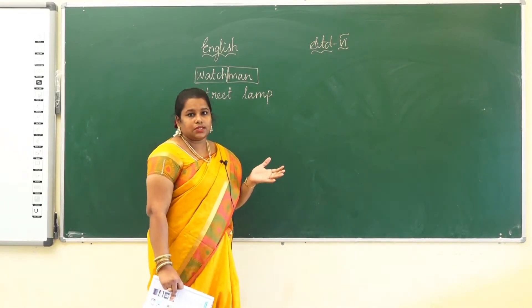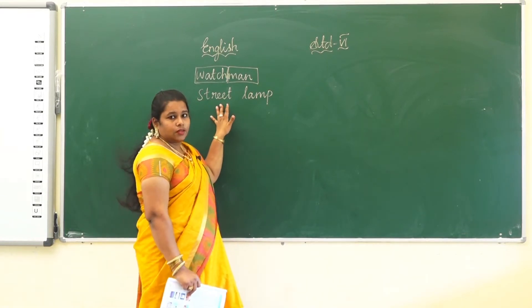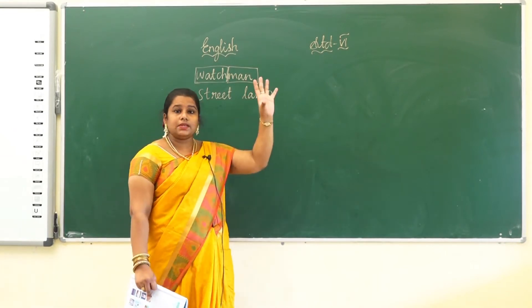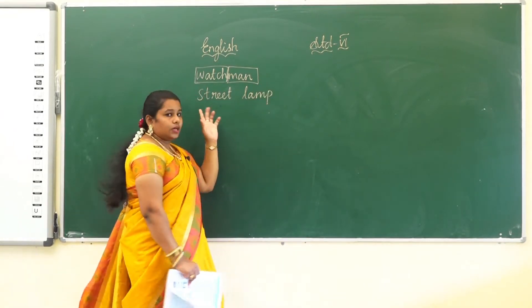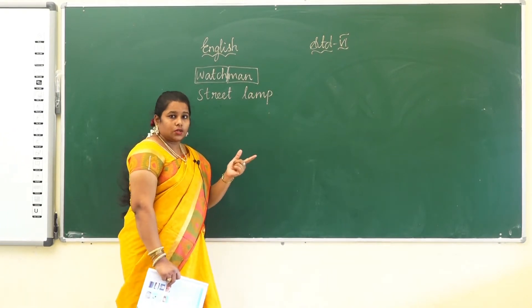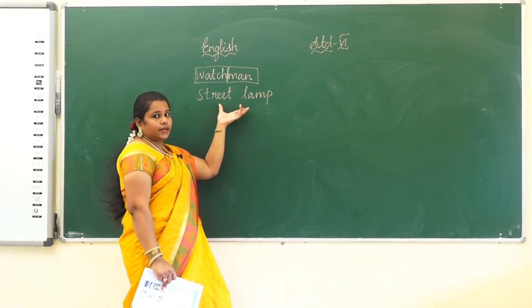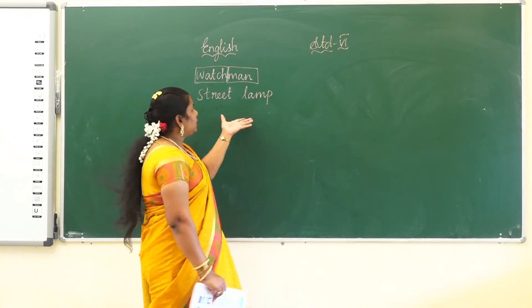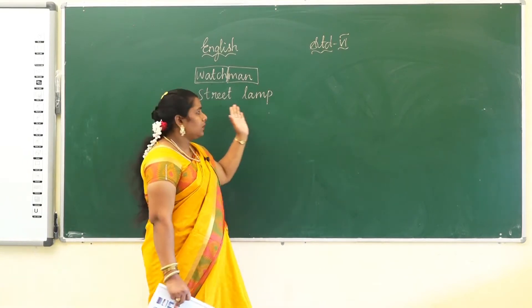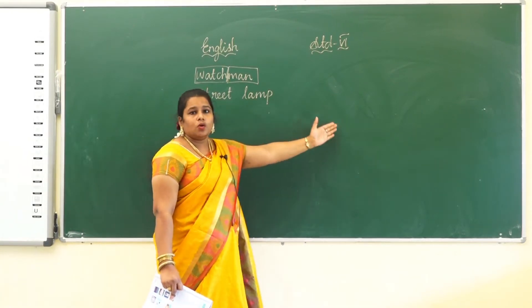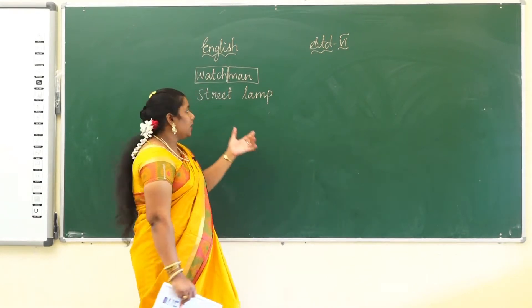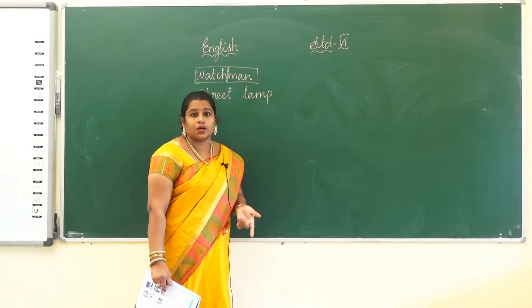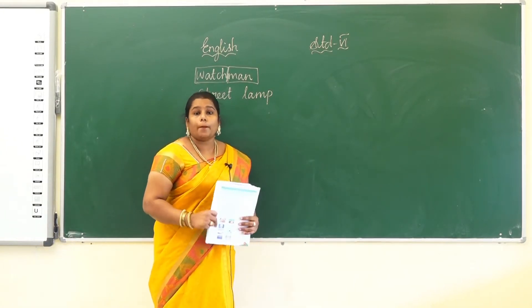Street lamp. Street is one thing and lamp is light. Street is another word and lamp is another word, but two words join together and form a new word. Street plus lamp gives us street lamp. If two words join together and form a new word, it is called a compound word. Now we are going to learn compound words.